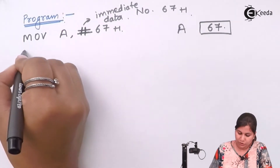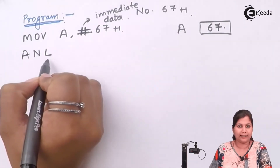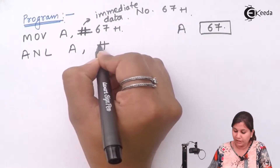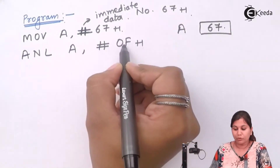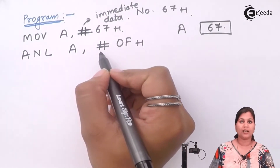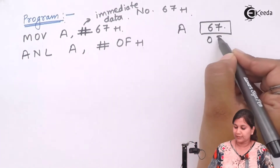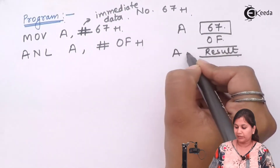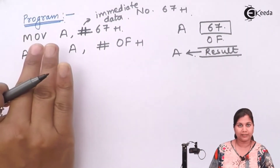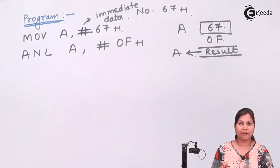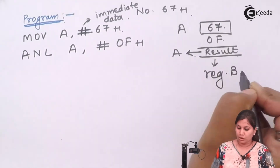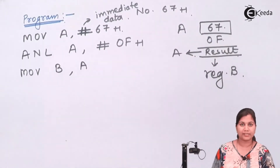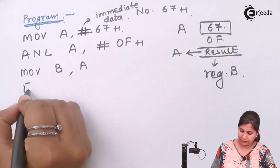Next, since the number is in the accumulator, we AND it with 0Fh using the instruction ANL A, #0Fh. ANL is the mnemonic for the AND instruction in the 8051 microcontroller. After this AND operation the result is stored back in the accumulator. It is given in the question that we must store the result in register B, so we then use MOV B, A to move the contents of the accumulator into register B.